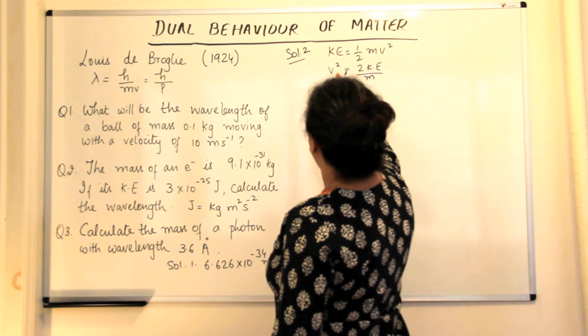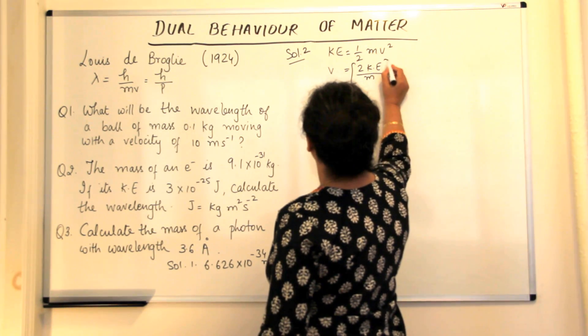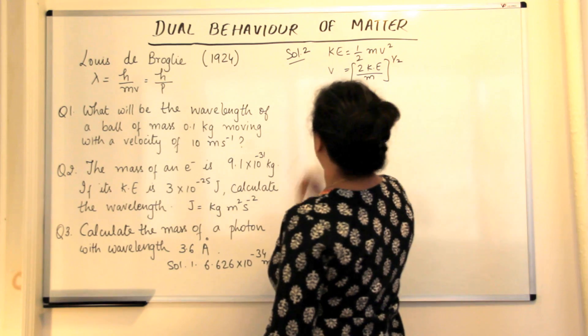So velocity square would be equal to twice kinetic energy upon the mass, am I right? So if we have to calculate the velocity, if you remove the square here, we have to find the square root of this, that is 1 by 2.